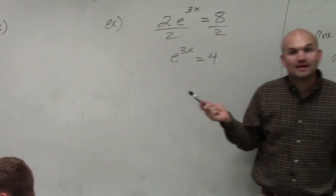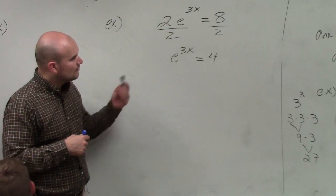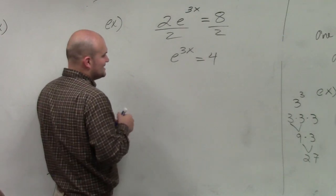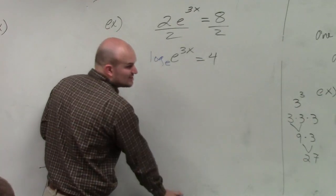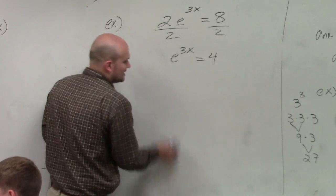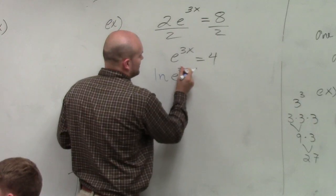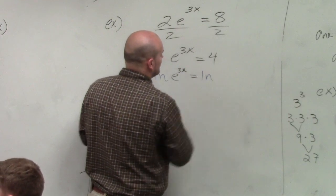However, I know that I can take log base e. But remember, when we have e, rather than taking this as the log base e, don't write this. What we use is, this is actually called your natural logarithm. So it looks like this: ln of e to the 3x equals ln of 4.